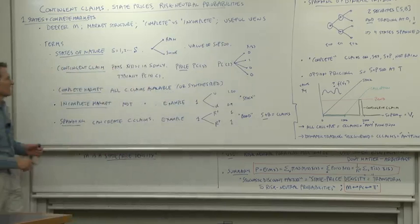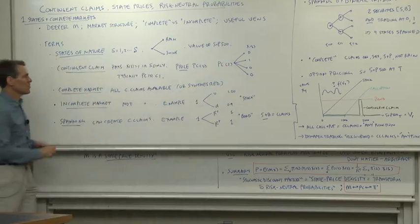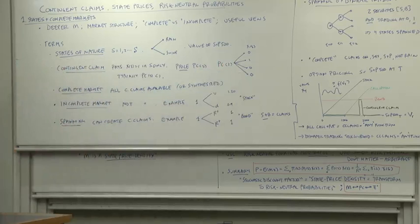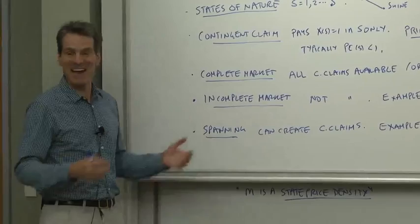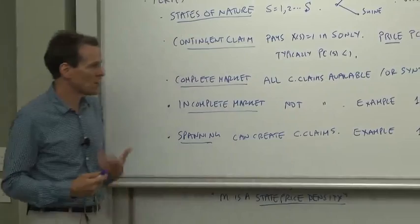Now, that need not be directly traded. A complete market is also one where you can synthesize a contingent claim to every state of nature, and in that sense, get anything that you could possibly want. An incomplete market is a market that doesn't have that many different securities traded, where not all contingent claims are available.